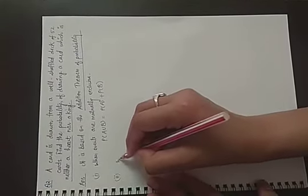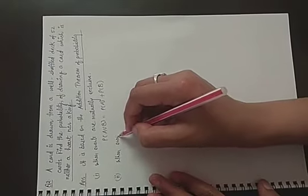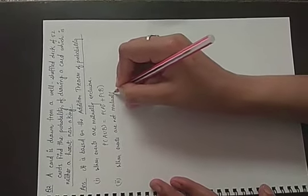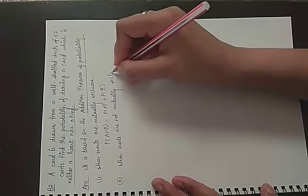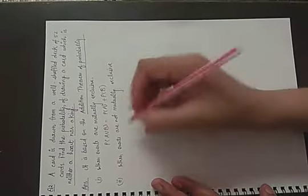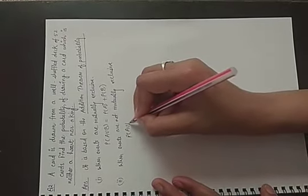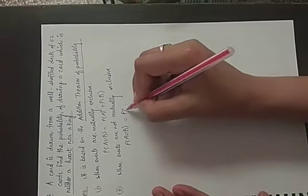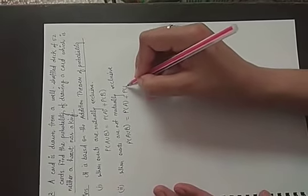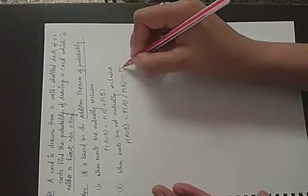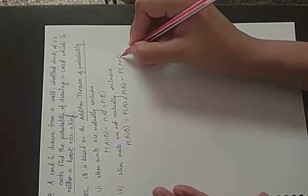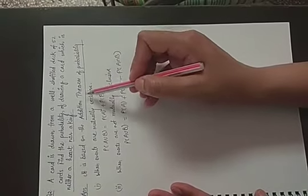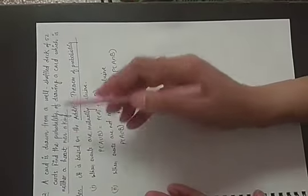Second case, when events are not mutually exclusive, then probability of happening of any event either A or B is equal to P of A plus P of B minus P(A intersection B). So, addition theorem is based on either or - either it is a heart or it is a king.